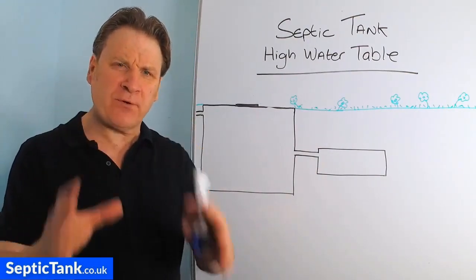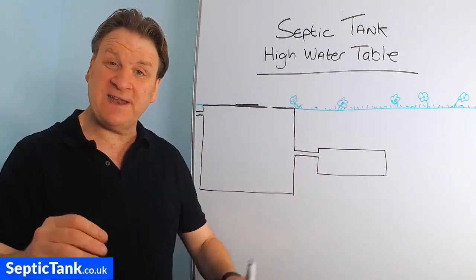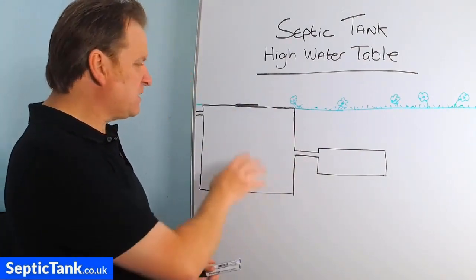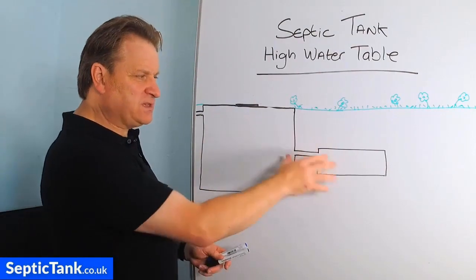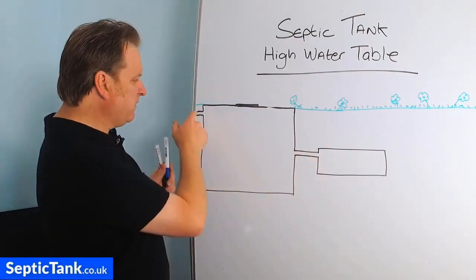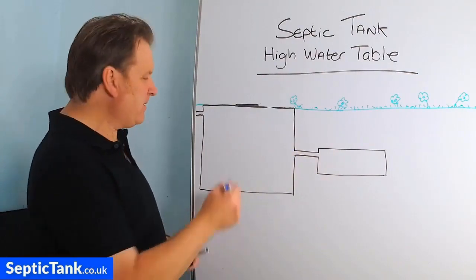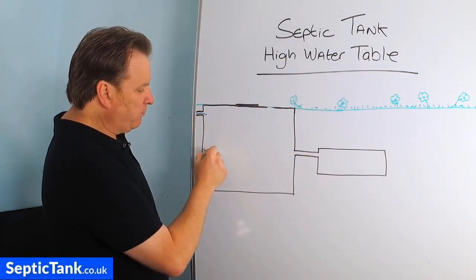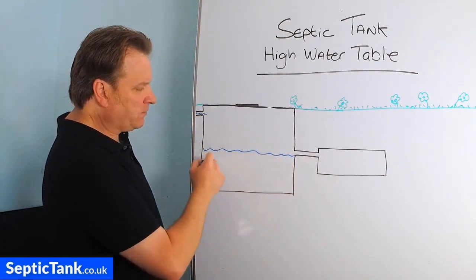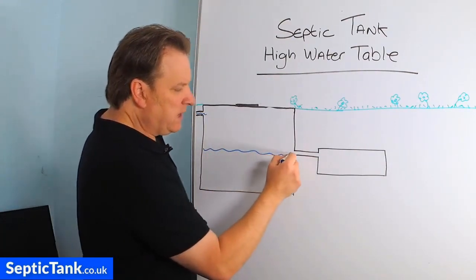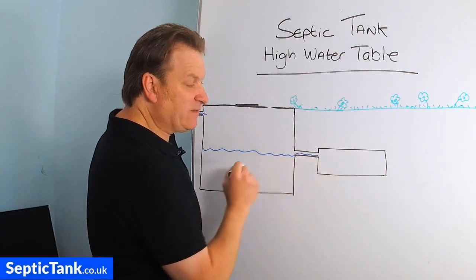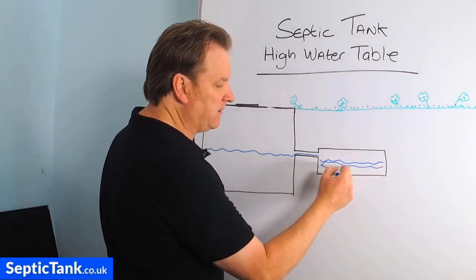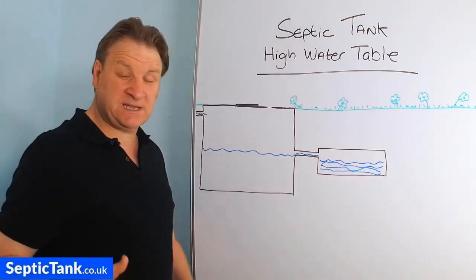First, let me show you the problems that come from living in an area where the water table is quite high. So this is your septic tank and this is your soakaway. You've got your inlet pipe and your outlet pipe. Water comes into the septic tank and fills up to a certain level — this is your waste water. It then normally makes its way down the outlet pipe and into the soakaway. That's how a septic tank and soakaway work.